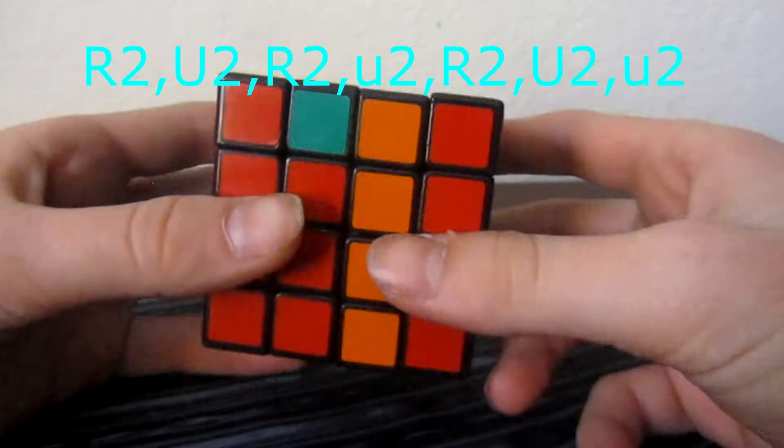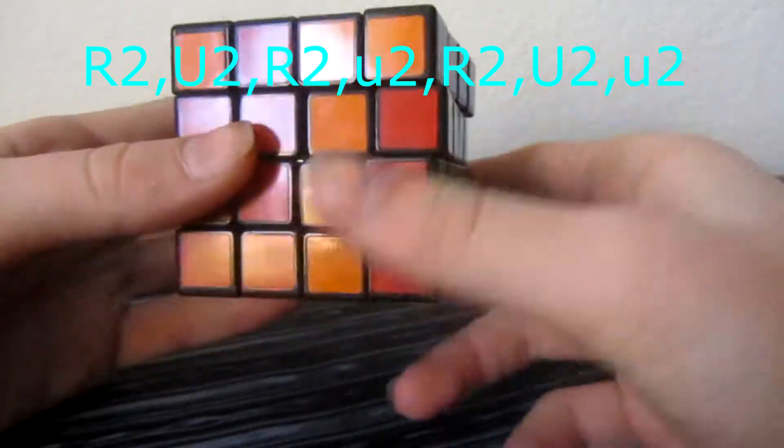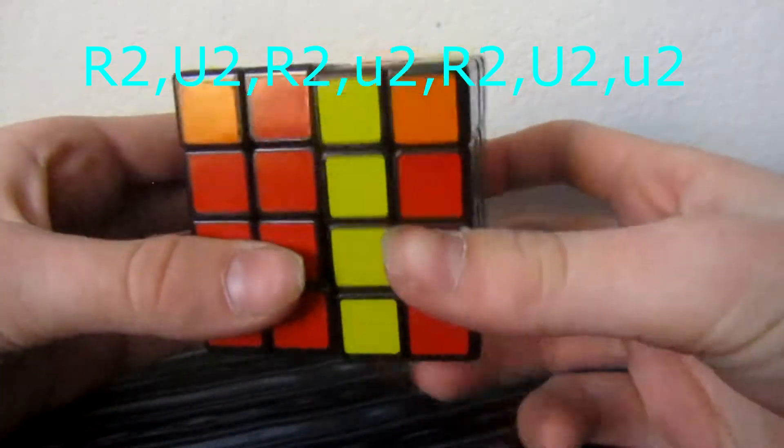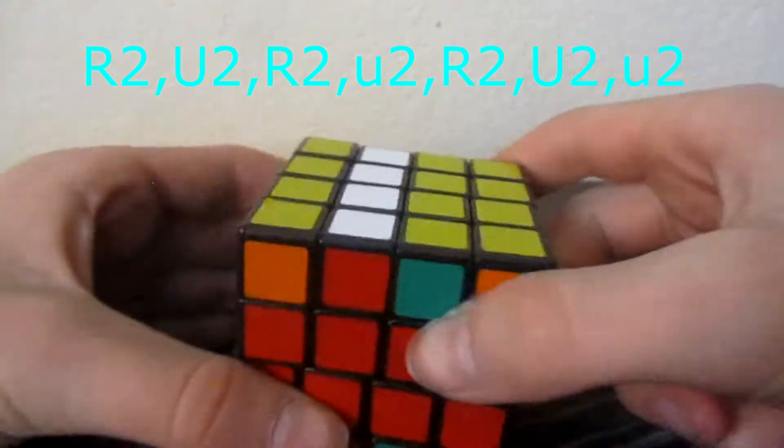Then you're going to move the top layer twice. Then you're going to move the right wedge up twice.